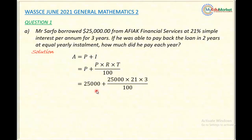Substituting, I will now have $25,000 plus $25,000 times 21 times 3 all over 100. $25,000 is the P, 21 is the R, and 3 is the T.